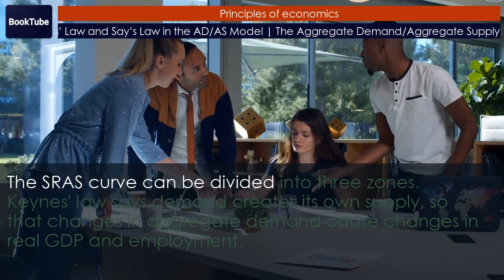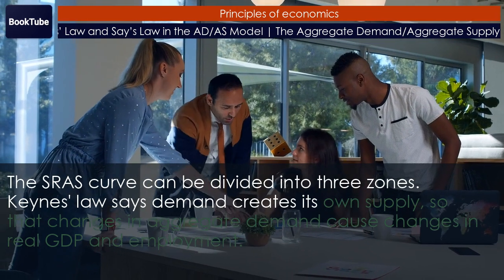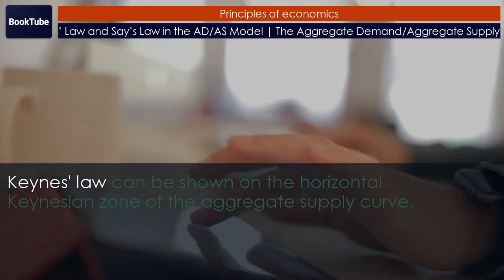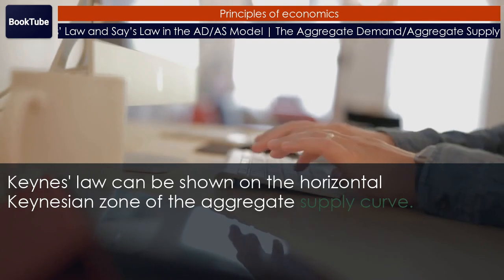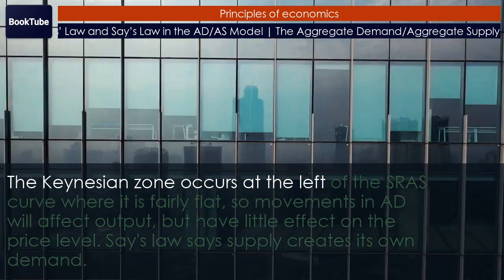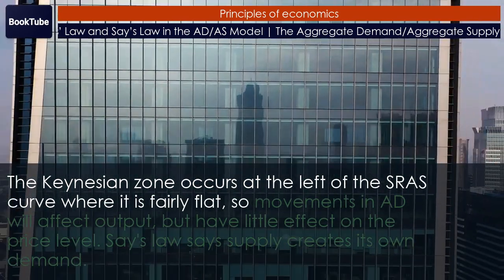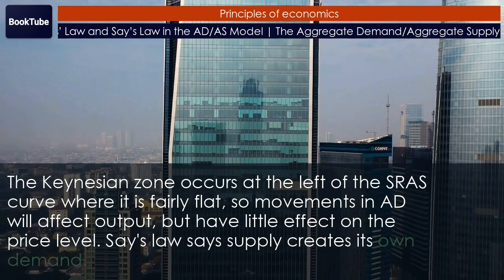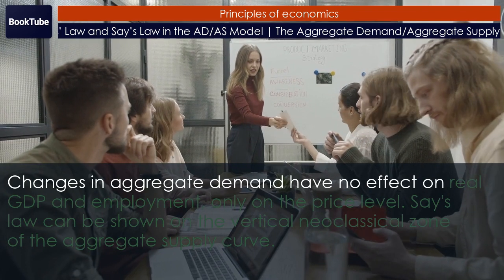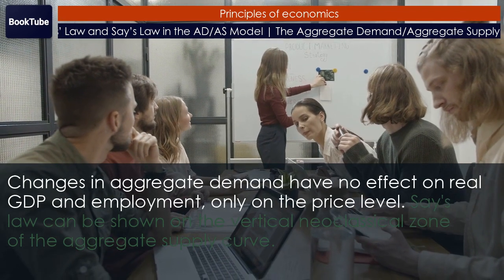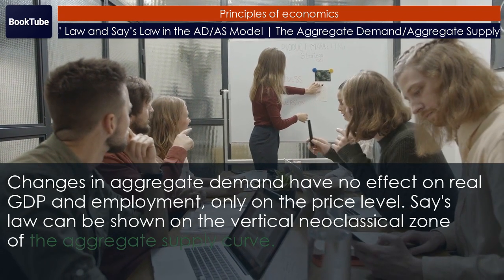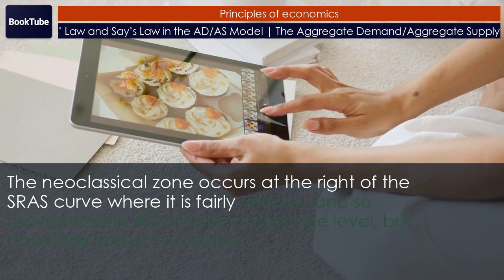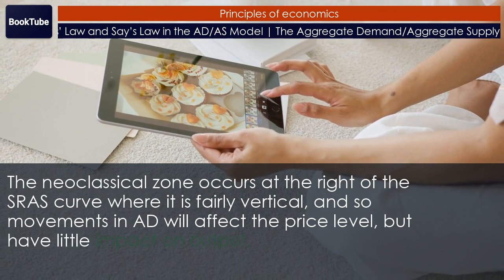The SRAS curve can be divided into three zones. Keynes' Law says demand creates its own supply, so that changes in aggregate demand cause changes in real GDP and employment. Keynes' Law can be shown on the horizontal Keynesian Zone of the aggregate supply curve. The Keynesian Zone occurs at the left of the SRAS curve where it is fairly flat, so movements in AD will affect output but have little effect on the price level. Say's Law says supply creates its own demand; changes in aggregate demand have no effect on real GDP and employment, only on the price level. Say's Law can be shown on the vertical Neoclassical Zone of the aggregate supply curve. The Neoclassical Zone occurs at the right of the SRAS curve where it is fairly vertical, and so movements in AD will affect the price level but have little impact on output.